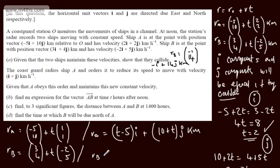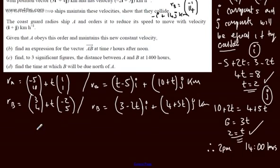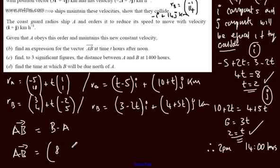Ship B's position remains RB = (3, 4) + T(-2, 5), which in i and j form is (3 - 2T)i + (4 + 5T)j kilometres. The vector AB equals B minus A. Subtracting: the i component gives -2T - T + 3 - (-5) = (8 - 3T)i, and the j component gives (4T - 6)j. So vector AB = (8 - 3T)i + (4T - 6)j kilometres, T hours after noon.